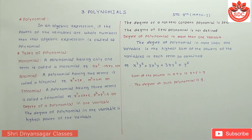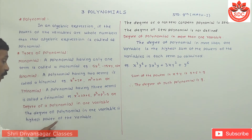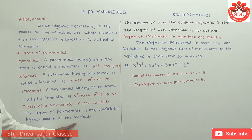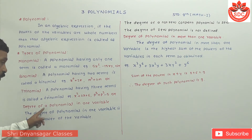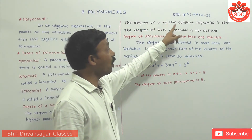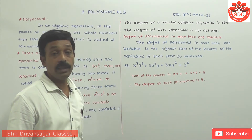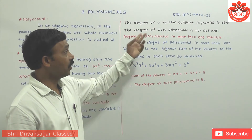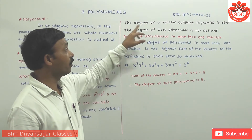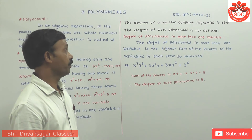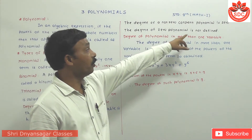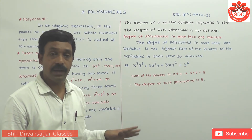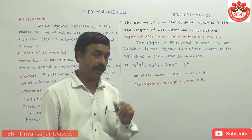Degree of polynomial in one variable: the highest power of that variable is called as the degree of that polynomial in one variable. The degree of a non-zero constant polynomial is 0 — for example, 25 is a non-zero constant, so the degree of 25 is 0. The degree of the zero polynomial is not defined.